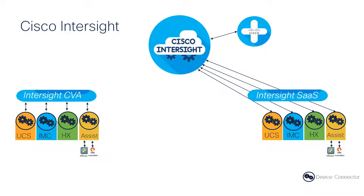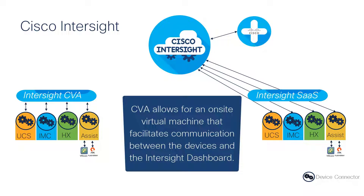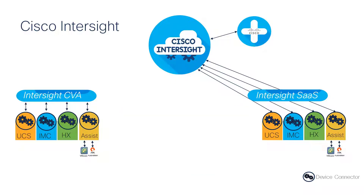With the Intersight Connected Virtual Appliance, we have an on-site device in the form of a virtual machine that can do the same thing. It can communicate with each one of our third-party devices as well as our UCS, CIMC, and HyperFlex devices, and that on-site virtual machine will then talk back to Intersight. This allows us to, for instance, download firmware from the Cisco Intersight dashboard and push it very quickly down to our on-site devices.